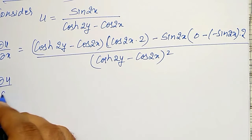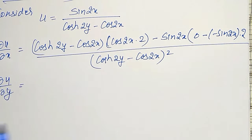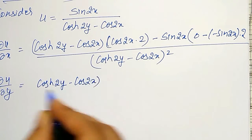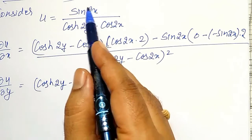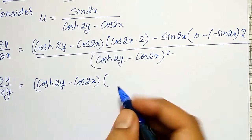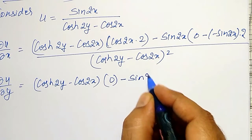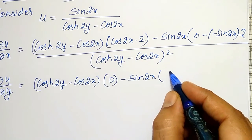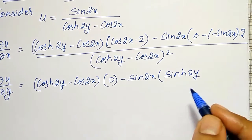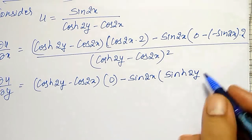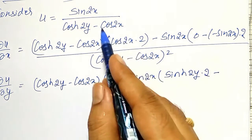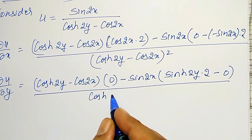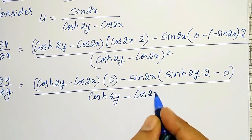Similarly, I want ∂u/∂y. I will differentiate partial with respect to y, applying the quotient rule to avoid confusion. That is: (cosh 2y − cos 2x) times the partial derivative of the numerator with respect to y — no y term is there, therefore its differential becomes 0 — minus sin 2x times the partial derivative of the denominator, which gives +sinh 2y · 2 (minus the partial derivative of cos 2x which is 0), all divided by (cosh 2y − cos 2x) squared.